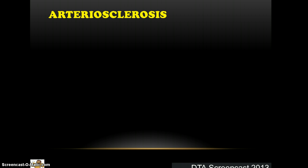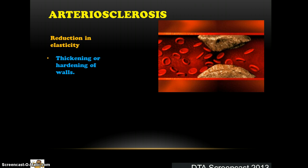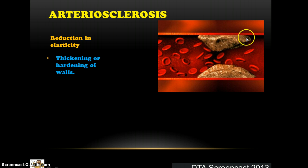The first one we're talking about is arteriosclerosis. This is related to a reduction in the elasticity, or thickening and hardening of the arteries, which reduces our ability to supply O2 to the relevant muscles. As shown in this diagram, the hardening reduces the amount and ability of blood flow through the arteries.